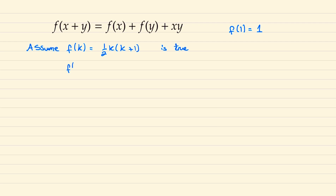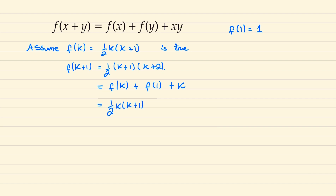We would like to show that f of k plus 1 must be of the form one half times k plus 1 times k plus 2. From our function f, f of k plus 1 will equal f of k plus f of 1 plus k times 1. We know f of k to be one half k times k plus 1, and f of 1 is 1, so this is adding on k plus 1. When we simplify this down we end up with the desired result.